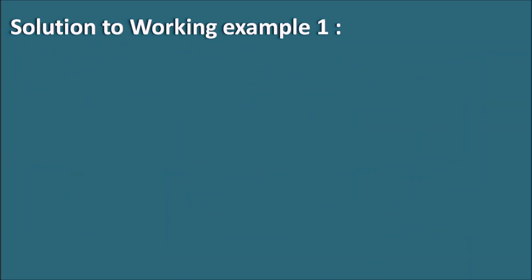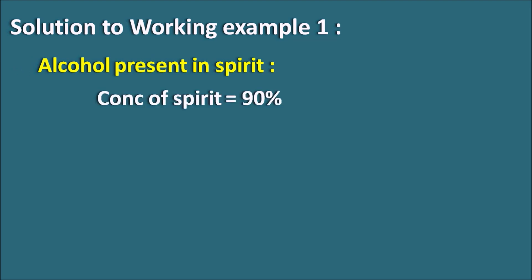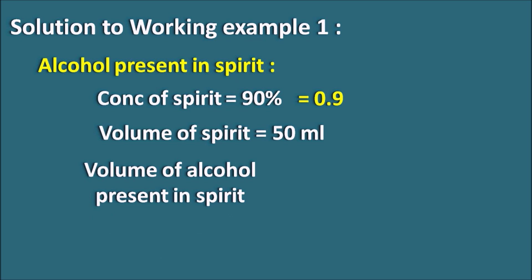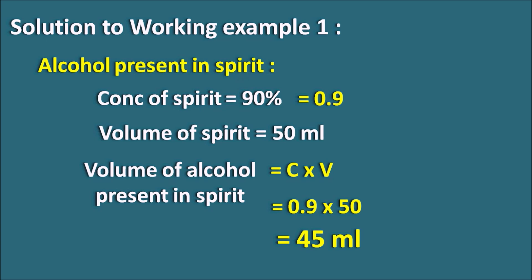Let us calculate the alcohol present in the spirit. The concentration of the spirit is given as 90%, which is 90/100 = 0.9 volume by volume. The volume of the spirit is 50 ml. The volume of alcohol present in the spirit is concentration × volume = 0.9 × 50 = 45 ml. So 50 ml of spirit contains 45 ml of alcohol, which is why it is 90%.